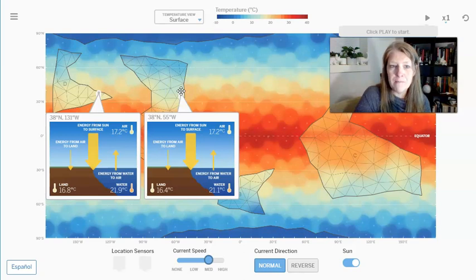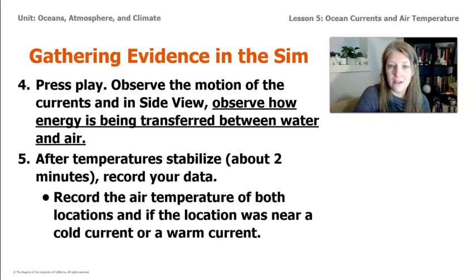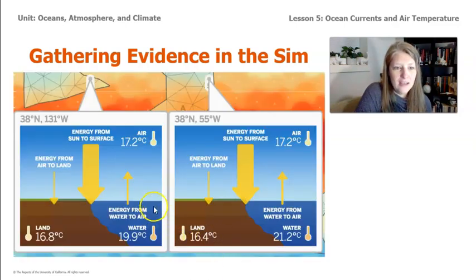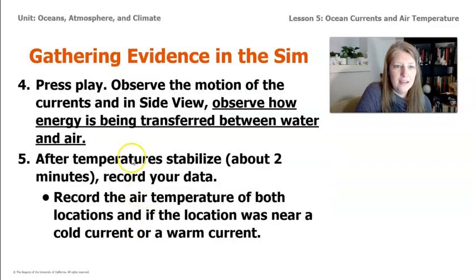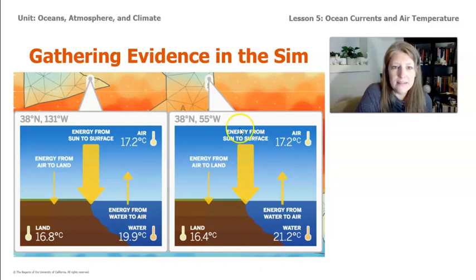What we're going to see is how the ocean current moving past each location affects it. After you've recorded the temperature of the air at locations 4 and 5, press play and observe how the motion of the currents in the side view affects the temperature of the ocean. Observe how energy is being transferred between the water and the air — you might want to do this a couple of times. There are three arrows: the big arrow shows energy from the sun to the surface.